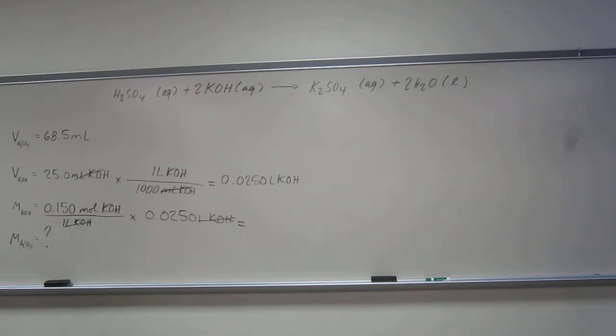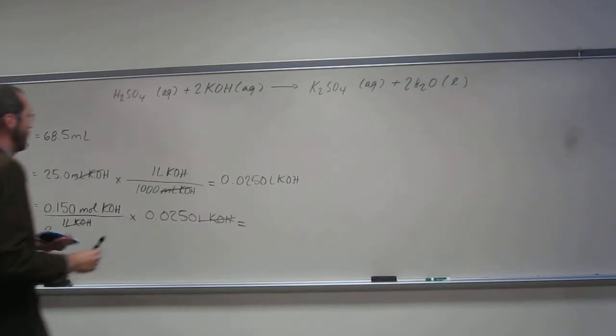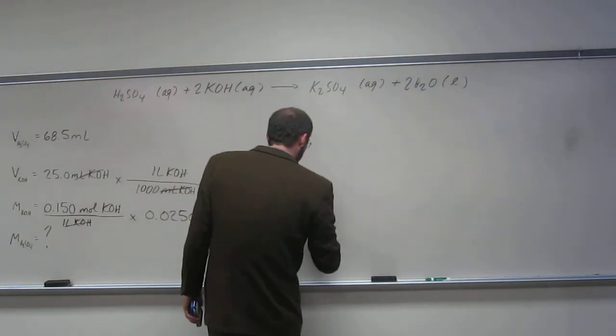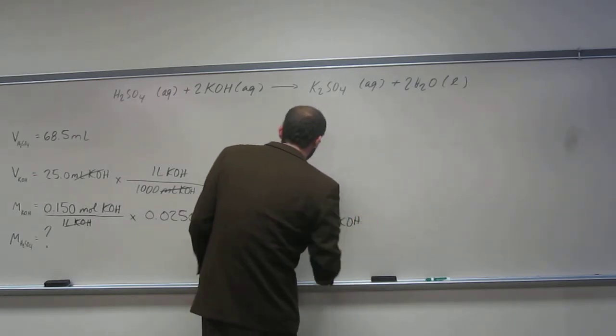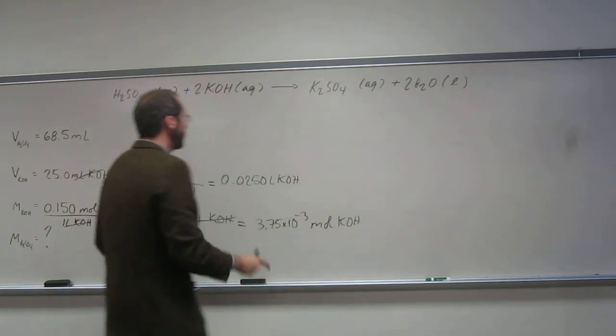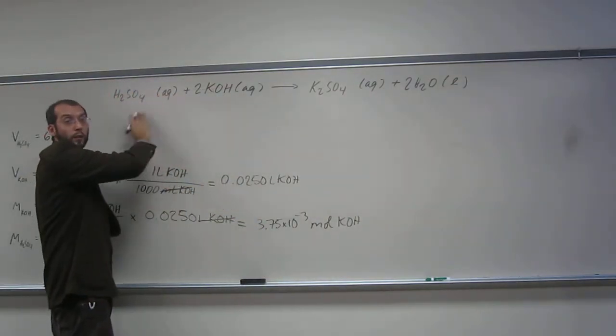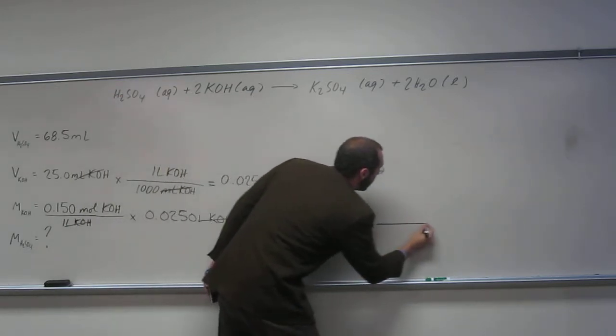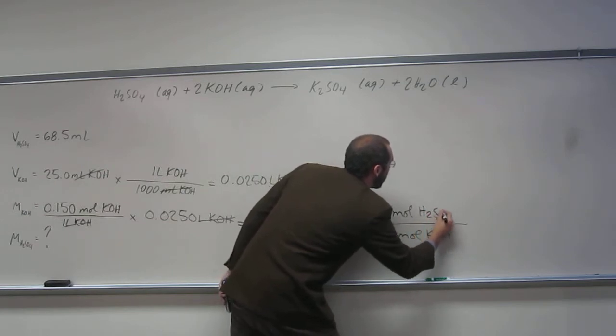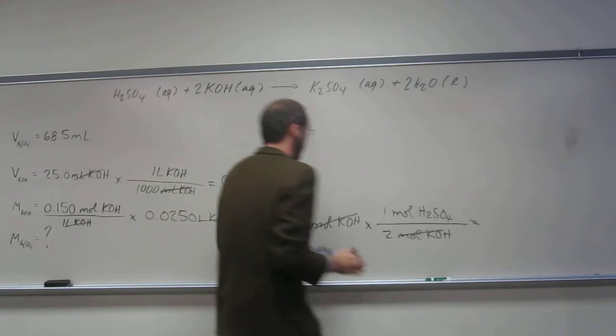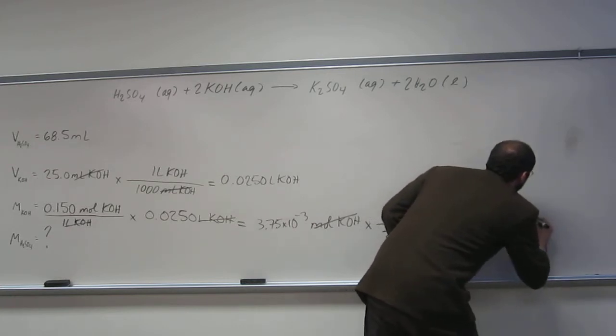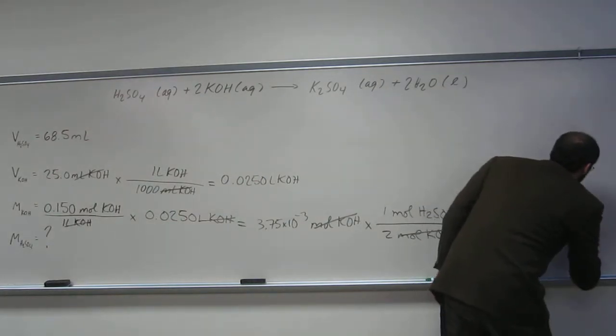So 0.15 times 0.025 is the same answer as before. So 0.00375 moles KOH. In fact, last time I put 3.75 moles. This time we've got a 2 to 1 ratio here. So that's the point where you're going to change. So 2 moles KOH to 1 mole sulfuric acid. So 1.88 times 10 to the negative 3 moles of sulfuric acid.